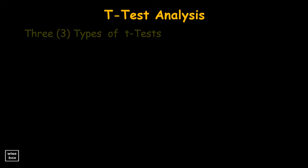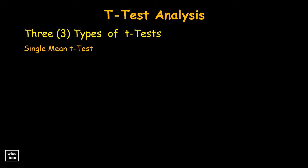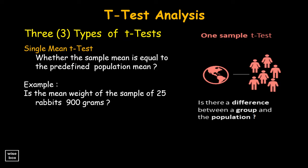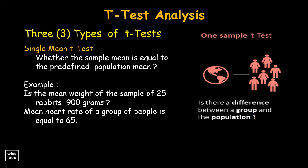Let us now go through the three types of t-tests. First, the single mean t-test. It is used to determine whether the sample mean is equal to the predefined population mean. Examples: Is the mean weight of a sample of 25 rabbits 900 grams? Mean heart rate of a group of people is equal to 65 or not.